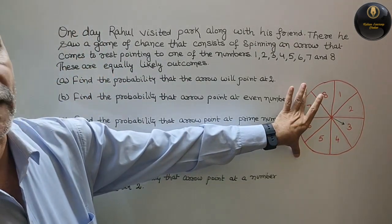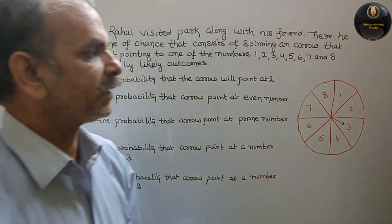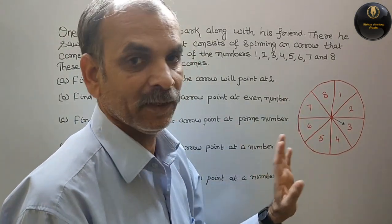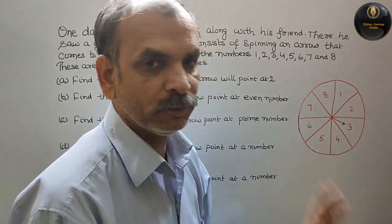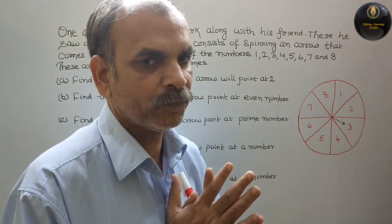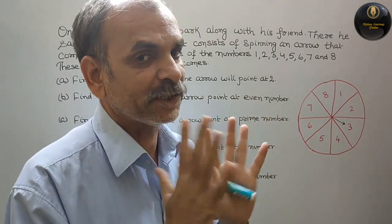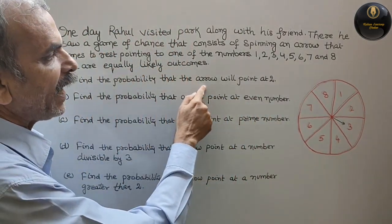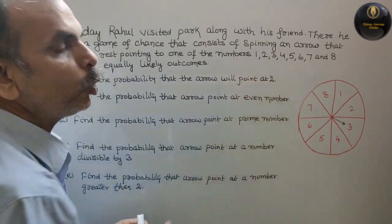So this is what is spinning. This is 1, 2, 3, 4, 5, 6, 7 and 8. And this is the arrow. This is the arrow that will point at 2.